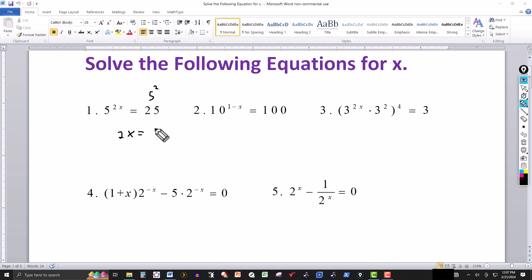So we can equate the exponents. 2x has to equal 2, divide 2 by 2, this cancels out, we get x equal to 2 over 2 is 1. So the answer to the first one is x equal to 1. You can easily check it by plugging it back into the equation.